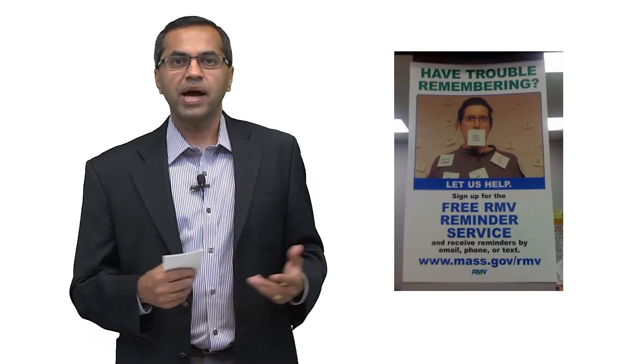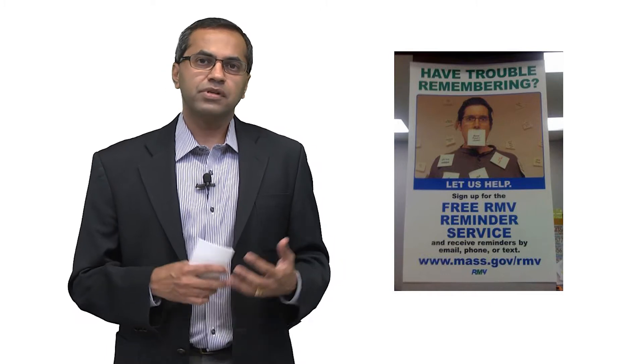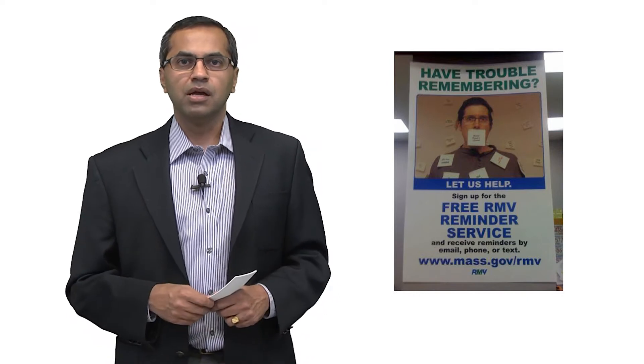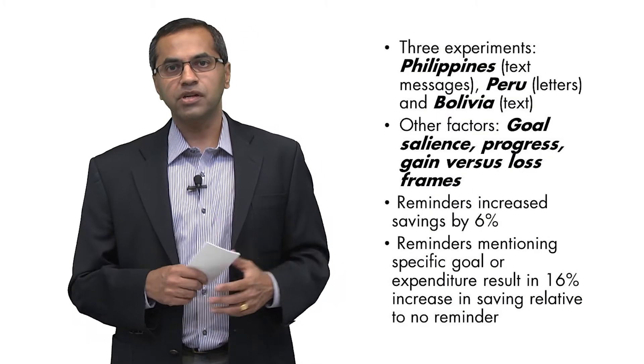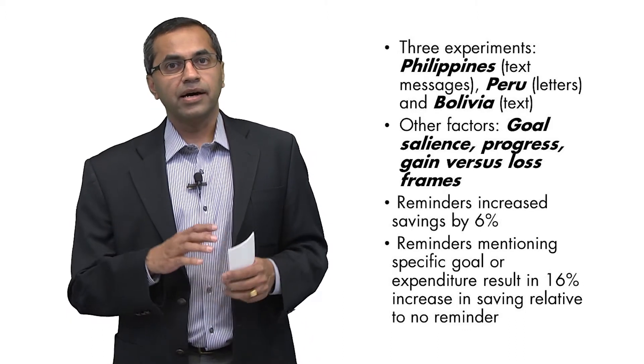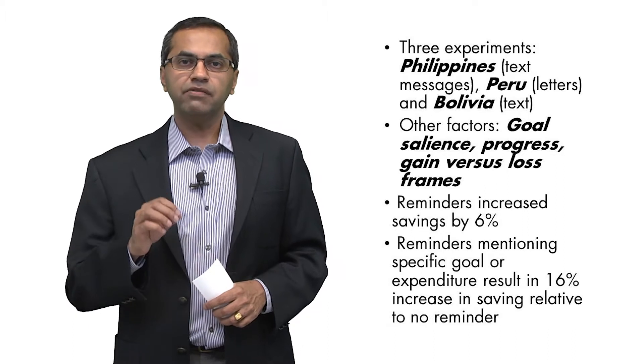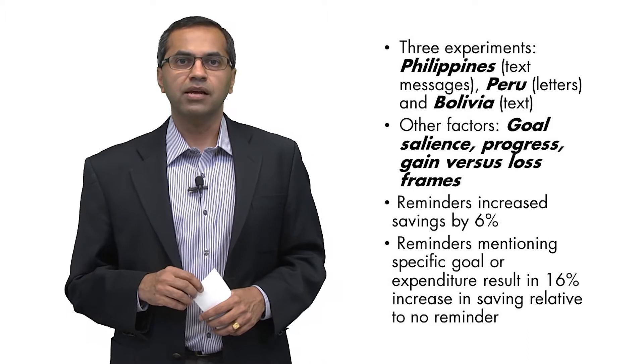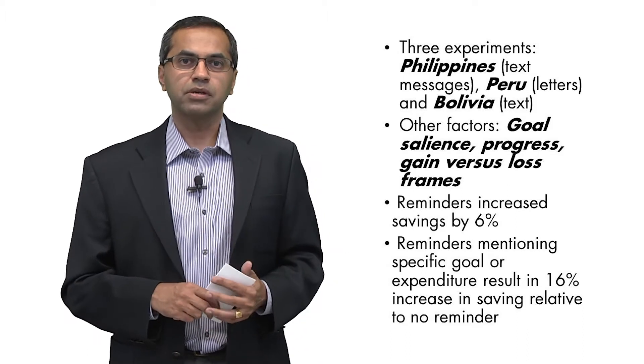Here's a second example: reminders. We've talked about the fact that all of us have good intentions, but we forget to do simple things like take our medications, pay our bills on time, make contributions to our retirement accounts, or renew driver's licenses. An experiment that was done by Dean Carlin and his colleagues in three different countries—they looked at the Philippines, Peru, and Bolivia—reminded people from time to time using interventions as simple as text messages or simple letters in the mail, to remind them to make contributions to their retirement plans.